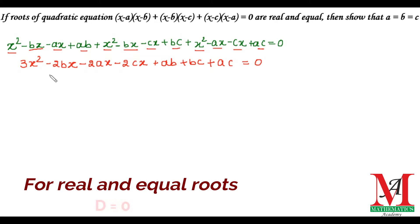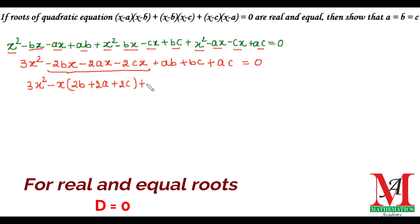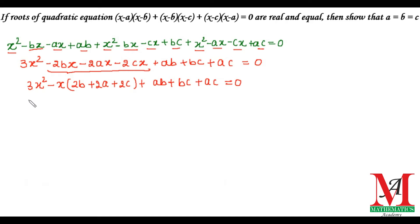Minus cx and minus cx and minus cx together give minus 2cx. Then plus bc and plus ac. Equals zero. On further simplification we have 3x squared, and taking x as common from these three terms we get minus 2x times (b plus a plus c), and the independent terms are ab plus bc plus ac equals zero. Taking 2 as common, we get 3x squared minus 2x(a plus b plus c) plus ab plus bc plus ac equals zero.